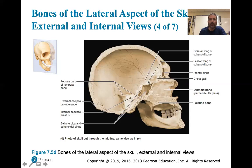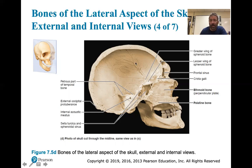The pituitary gland sits in the sella turcica. If the pituitary gland is atrophied, it can be cancerous or developmental. In an infant, it's not sustainable with life. In an adult, it causes major endocrine disruptions - they may be on endocrine therapy for the rest of their life if they can correctly figure out what the problem is.